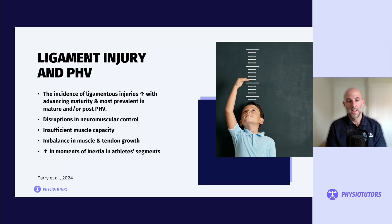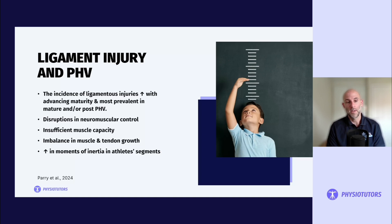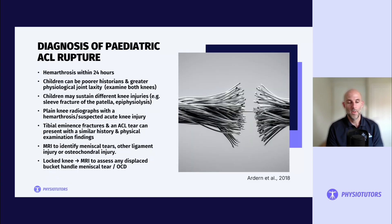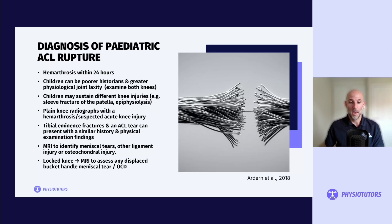Ligamentous injury incidence increases with advanced maturity and is most prevalent in the mature or post-peak height velocity phase. This may be due to disruptions in neuromuscular control, insufficient muscle capacity, imbalance in muscle and tendon growth, and increased moments of inertia in athlete segments affecting rotational control. MRIs are used to identify meniscal tears, other ligament injuries, or OCD lesions. If a child presents with a locked knee, MRI is warranted to assess for displaced bucket-handle tears or OCDs.